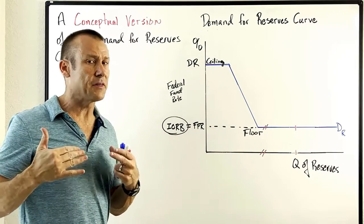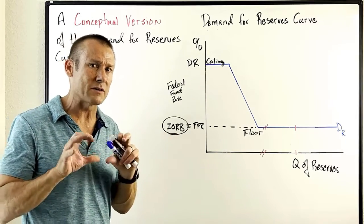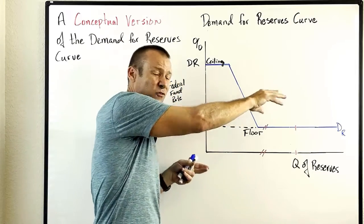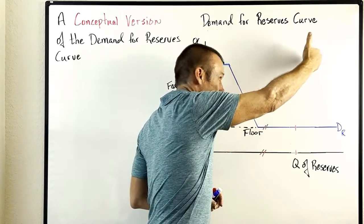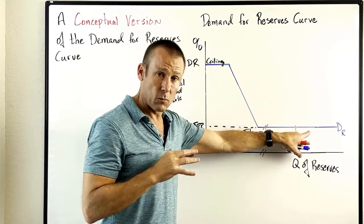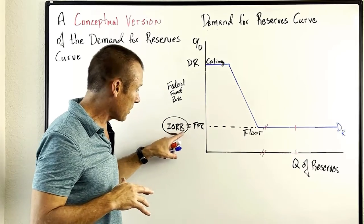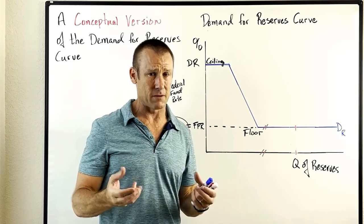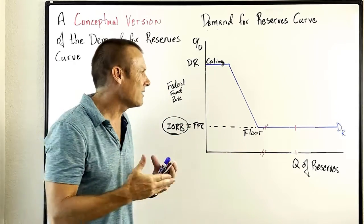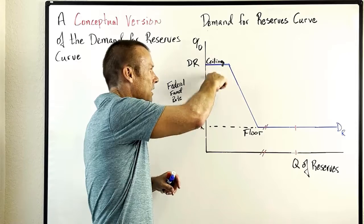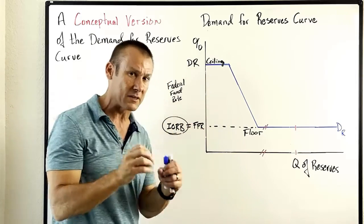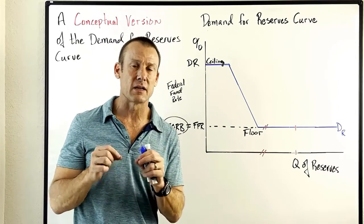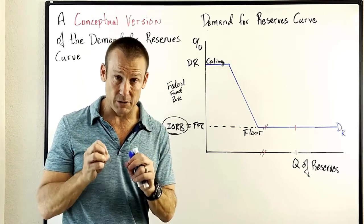That reservation rate concept is really important — in some ways you could end there. You've got your floor, you've got your ceiling, and the supply curve is far off to the right, so the interest rate on reserve balances has got to give us our federal funds rate. But there is another question: why doesn't the federal funds rate hover somewhere in between? Why does it really gravitate to the interest rate on reserve balances? To understand that, you have to understand the concept of arbitrage.